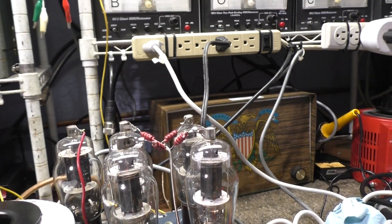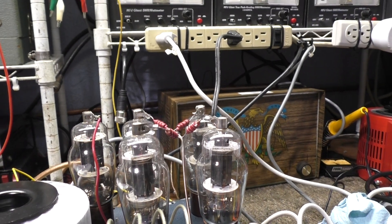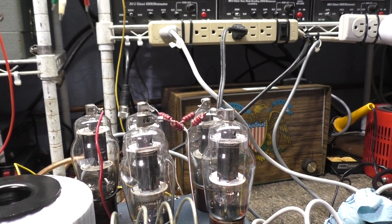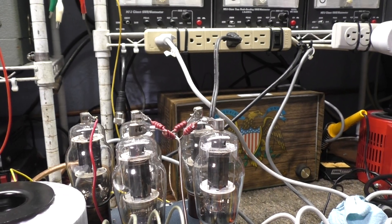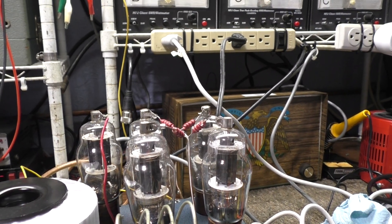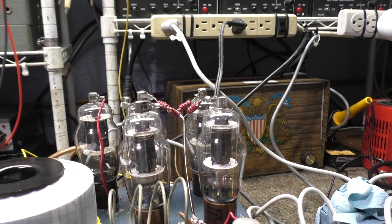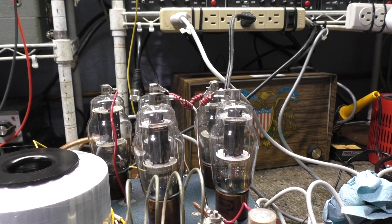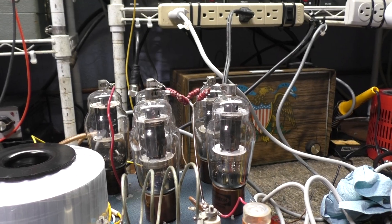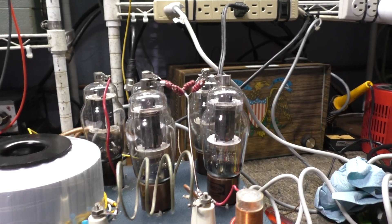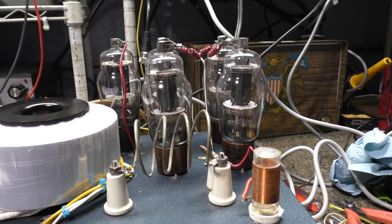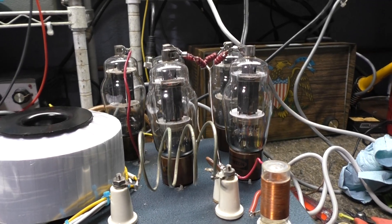Those are equivalent to 807s with a little bit different base and the filament voltage is different, but basically 807s. Very early tubes, they were used in World War II according to Wikipedia. At the end of World War II they had a surplus on them and you could get them for a penny from Wikipedia back then, I guess they say.